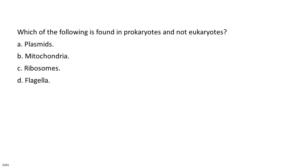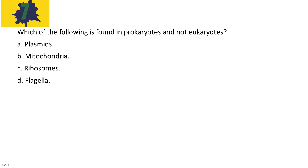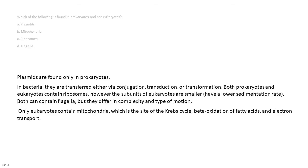Which of the following is found in both prokaryotes and eukaryotes? A. Plasmids. B. Mitochondria. C. Ribosomes. D. Flagella. The answer is C. Ribosomes. Plasmids are found only in prokaryotes. In bacteria, they are transferred either via conjugation, transduction, or transformation. Both prokaryotes and eukaryotes contain ribosomes, however the subunits of eukaryotes are smaller with a lower sedimentation rate. Both can contain flagella, but they differ in complexity and type of motion. Only eukaryotes contain mitochondria, which is the site of the Krebs cycle, beta-oxidation of fatty acids, and electron transport.